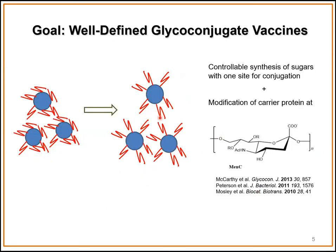For this first goal, some of the work I previously did in my postdoc was determining how we can use enzymes for size-controlled sugars so that we can make well-defined glyco-conjugate vaccines. As you heard in the previous talk about the importance of valency, currently glyco-conjugate vaccines are heterogeneous in that we can have multiple attachment points of the capsular sugars to the carrier protein.